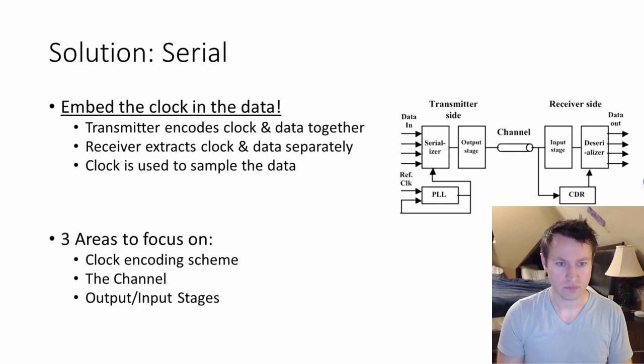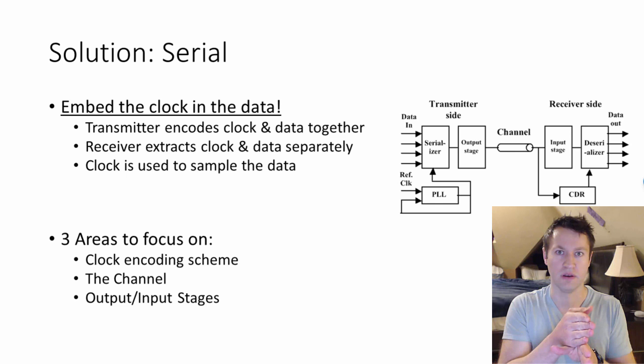Three things to talk about when it comes to SerDes and high-speed serial communication: the encoding scheme itself to take your clock and your data and encode them into just one data path, and the channel itself—how does the cable work? What does it look like from a wiring perspective? And then also the input and output stages of, in this case, it'd be an FPGA. What do those do? What's special about those?